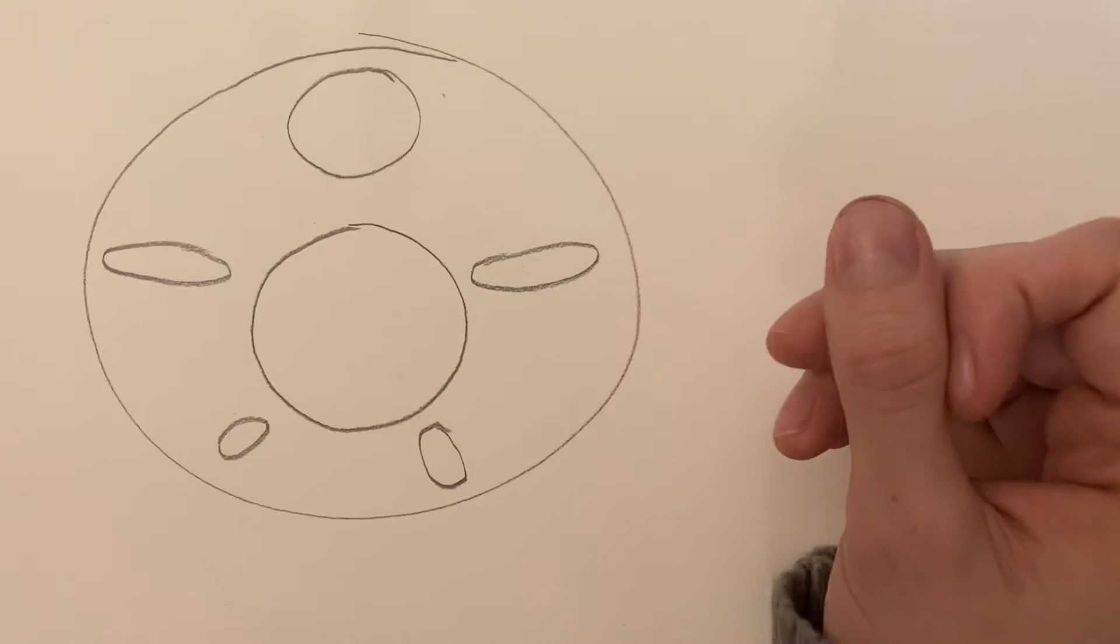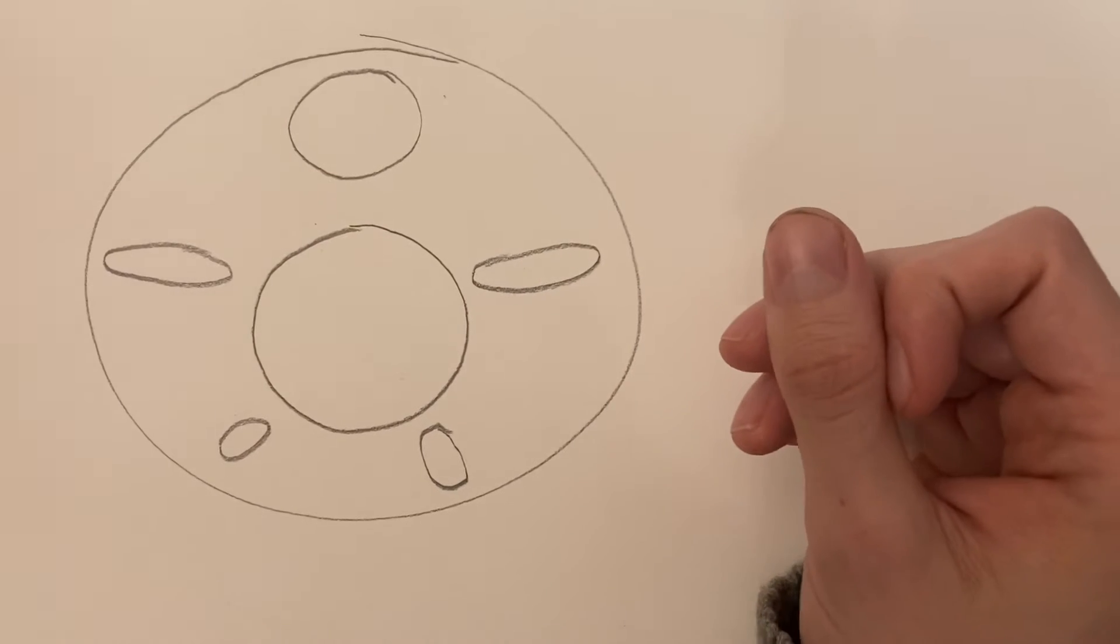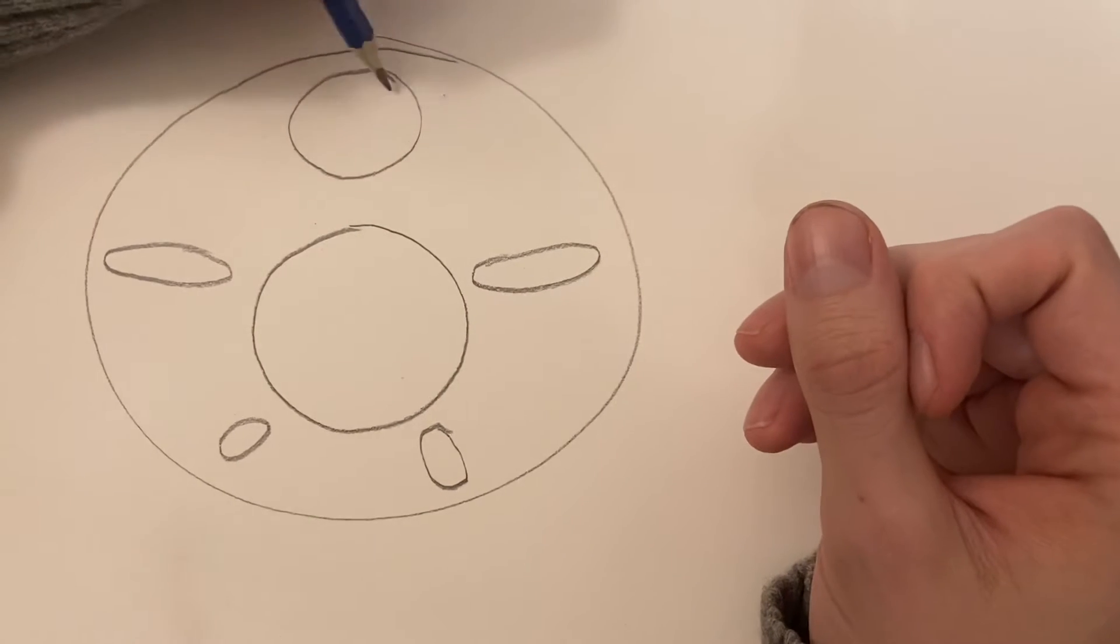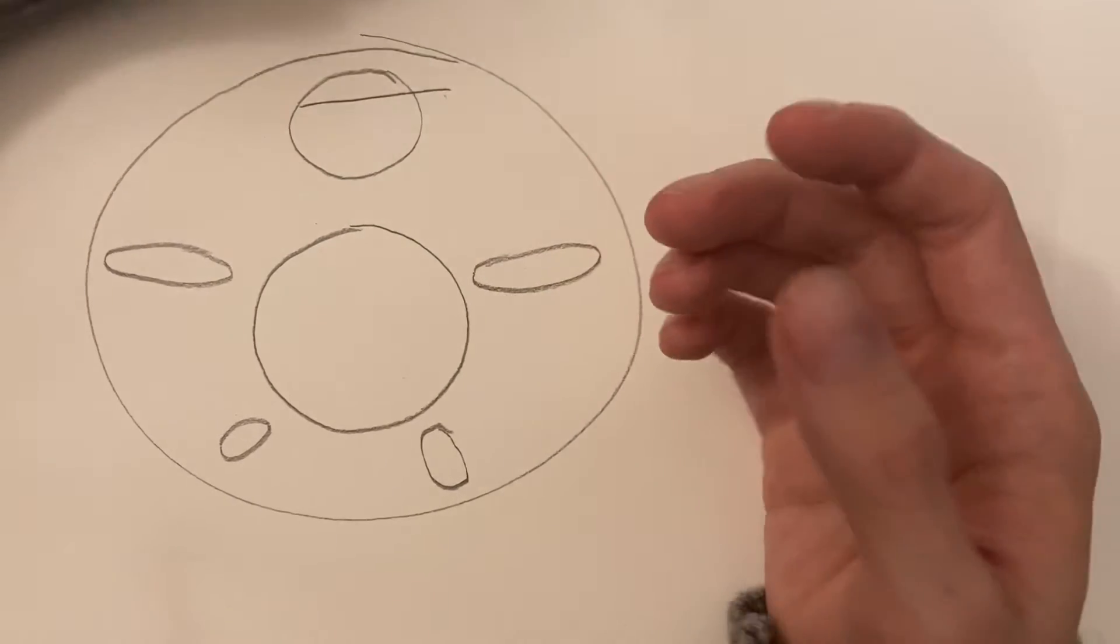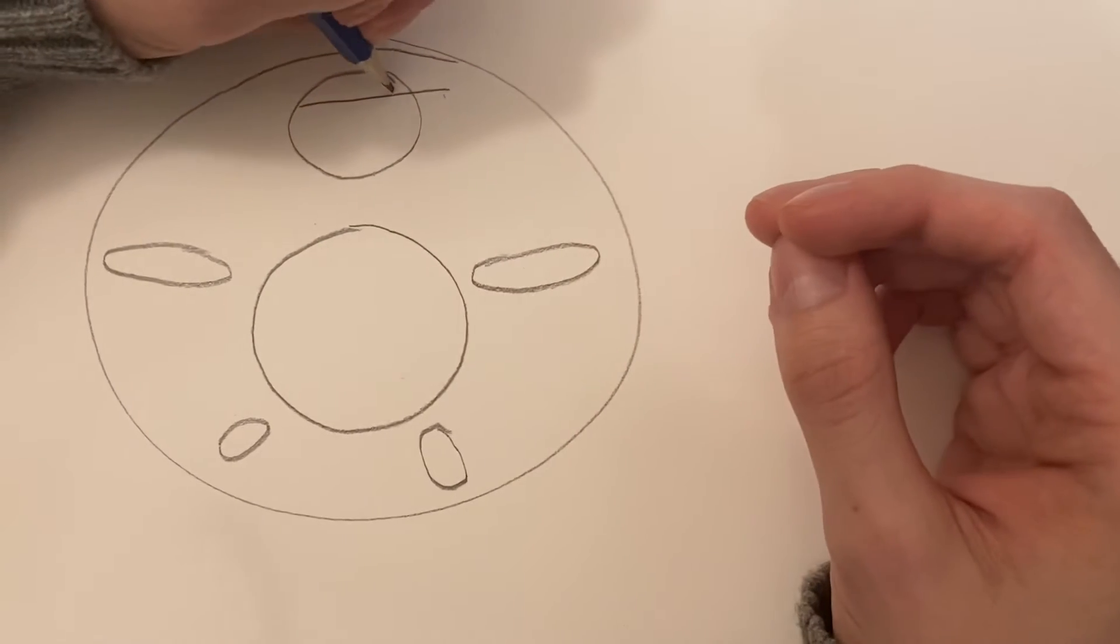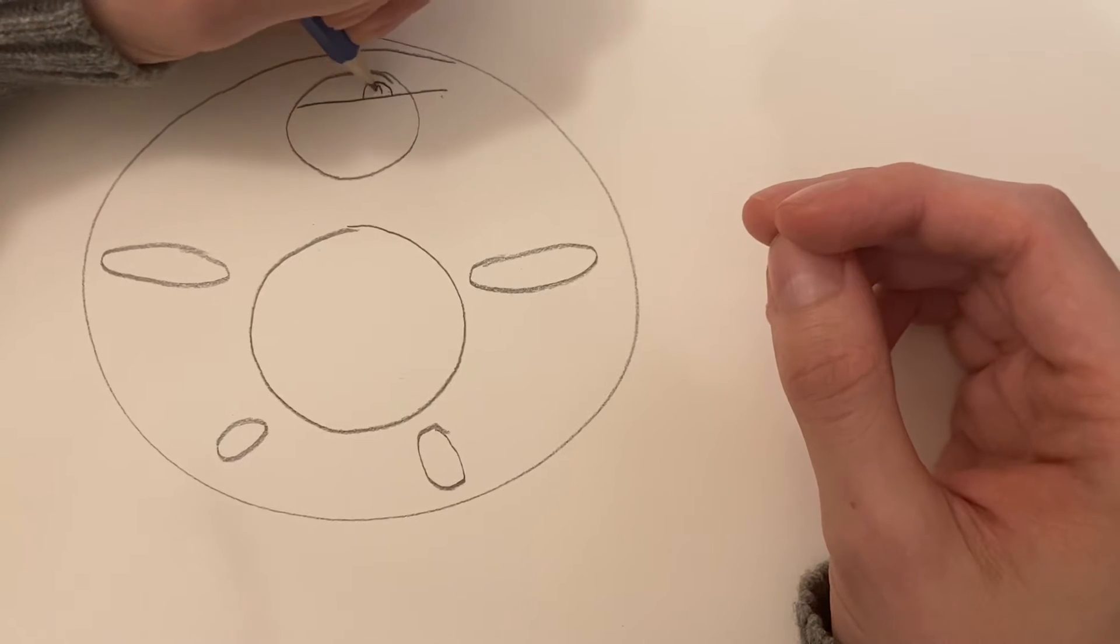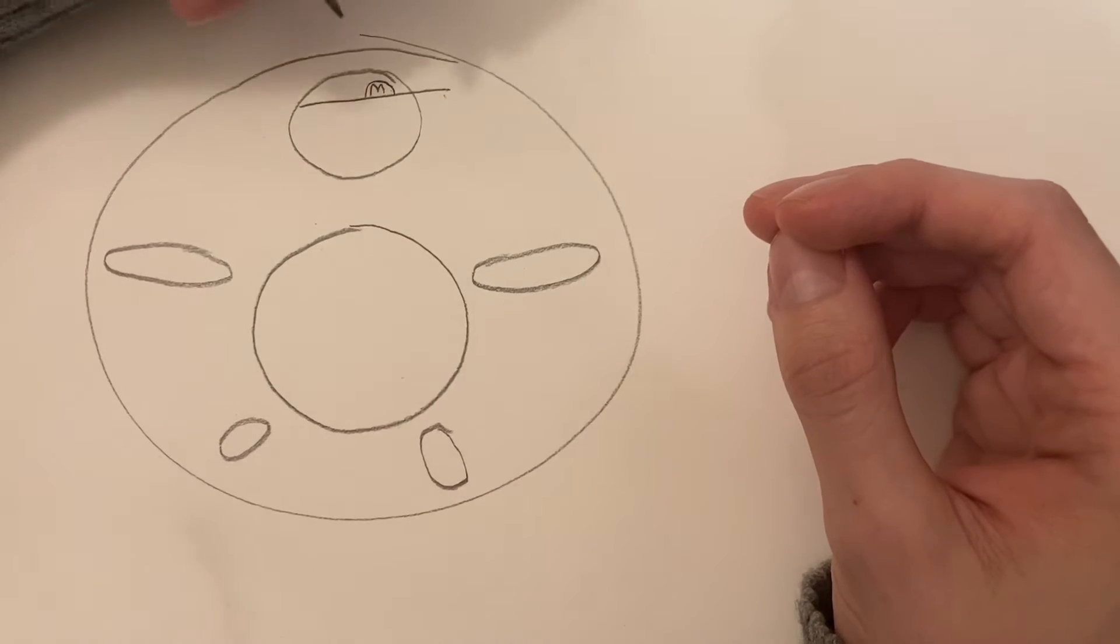Now that you've got the foundation down, the next important thing is to put a hat. Simple. Just draw a straight line. You have a hat on him. And then his hat is known for having the letter M on it.